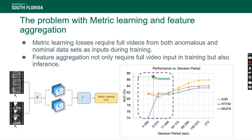Prior research has been heavily dependent on metric learning losses. These losses require several segments of anomalous data and nominal data to be trained together, so that the network can differentiate between the two patterns.